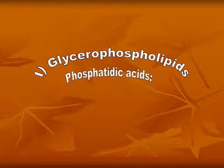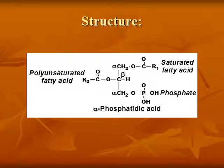Glycerophospholipids — the first is phosphatidic acid. Structure: phosphatidic acid consists of glycerol, two fatty acids — one of them saturated and the other polyunsaturated — and phosphoric acid.